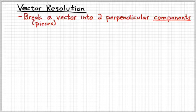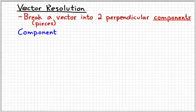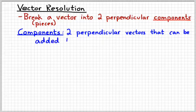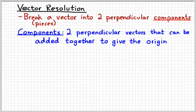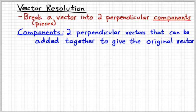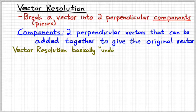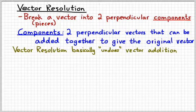Component means a part of something. And so what we're going to be doing is taking a vector and breaking it into two parts so that we can kind of understand what's going on and make problem solving a little bit simpler. So again a component is the perpendicular part of a vector, two components that can be added together to give you the original vector. Vector resolution is basically what undoes vector addition. So it's kind of sort of the opposite of vector addition.